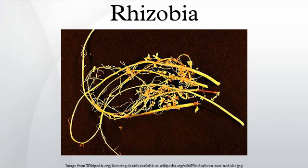Rhizobia are unique in that they are the only nitrogen-fixing bacteria living in a symbiotic relationship with legumes. Common crop and forage legumes are peas, beans, clover, and soy.